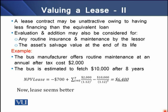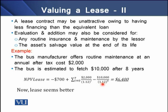For a further exercise, consider a bus manufacturer offering routine maintenance at a cost of $2,000, and the bus is estimated to have a salvage value of $10,000 after eight years. With this data, we can determine the net present value of the lease term in our example. We start with a negative $700 NPV of the lease, then determine the present value of the annual maintenance cost offered to the lessee and the present value of the salvage value. The salvage value is negative here because we previously assumed zero value at the end of the project life, so the lessee foregoes this amount.